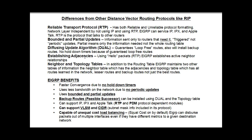EIGRP establishes adjacencies, or neighbor relationships, with other routers. It uses hello packets — that's the RTP protocol — to establish these active neighbor relationships. In addition to a routing table, EIGRP also has a neighbor table, which holds those adjacencies, and a topology table, which has all the routes learned in the network, including lesser routes and backup routes.